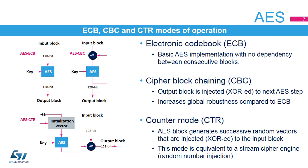The third mode of operation is the counter mode, or CTR. In this mode, the AES engine is used as a random stream generator. The resulting random stream is mixed with the input message with an exclusive OR operation. As for CBC, CTR requires an initialization vector different for each encryption session.